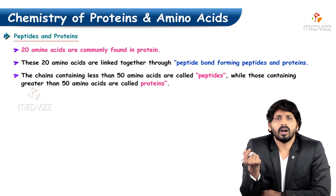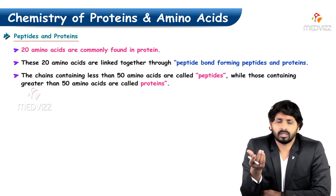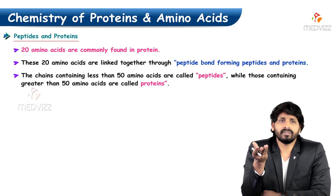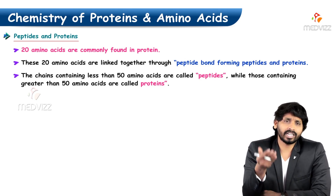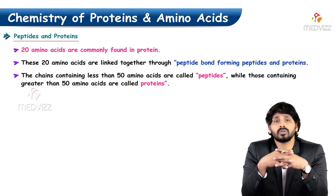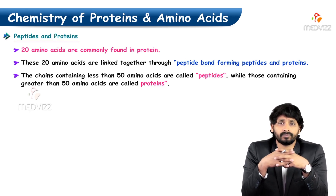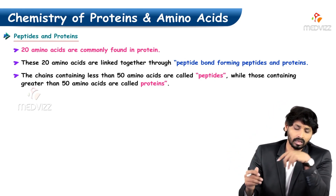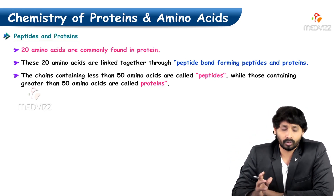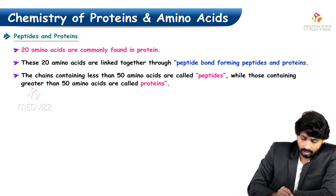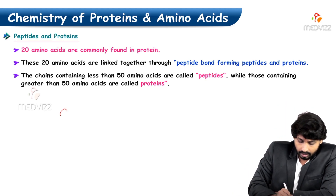Insulin is a hypoglycemic hormone, but it has a limited number of amino acids. Active insulin has 51 amino acids, so it is considered a peptide rather than a protein. All 20 amino acids are found in proteins.